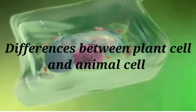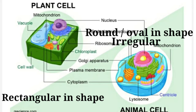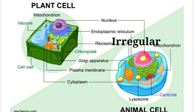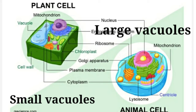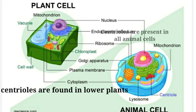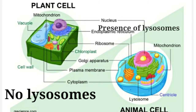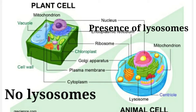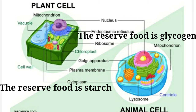Now let us look at the difference between plant cell and animal cell. Plant cells are usually larger and rectangular in shape, whereas animal cells are smaller and round or irregular in shape. Plant cells contain a cell wall made up of cellulose, whereas animal cells don't have a cell wall. Plant cells have one or more comparatively very small vacuoles, whereas animal cells have larger central vacuoles. Centrioles are present in lower forms of plants, whereas centrioles are present in all animal cells. Plant cells don't have lysosomes, while animal cells contain lysosomes. Plant cells consist of chloroplasts, whereas animal cells don't have chloroplasts. In plant cells, the reserved food is starch, whereas in animal cells the reserved form of food is glycogen. I hope you have understood the concept of the cell. See you in the next video. Thank you.